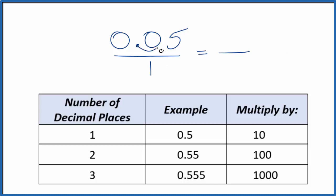Next, we see that we have two decimal places. When we have two decimal places, we multiply the numerator and the denominator by 100, like this.